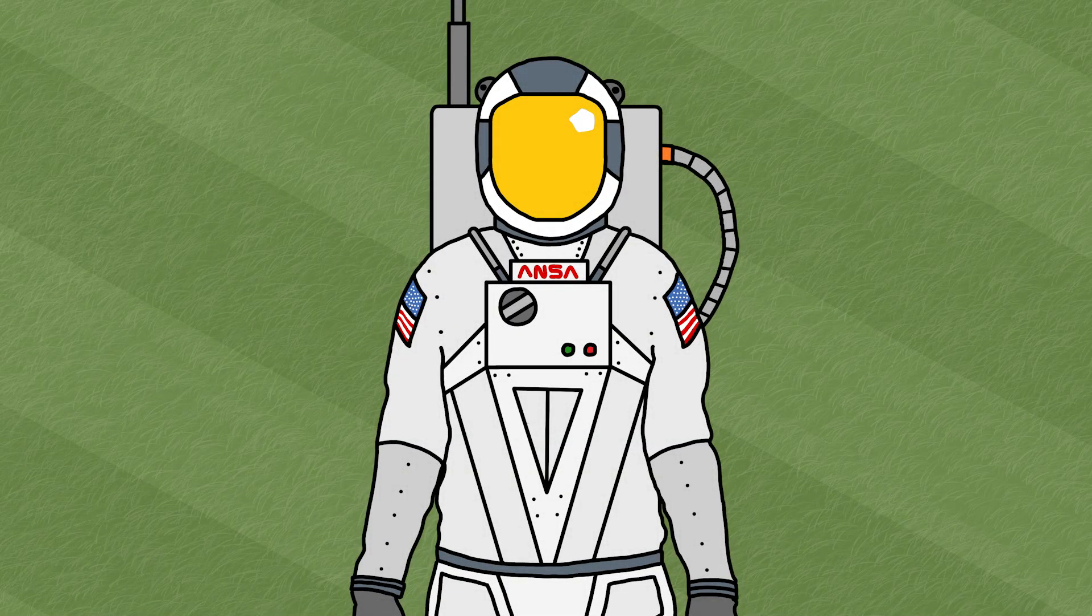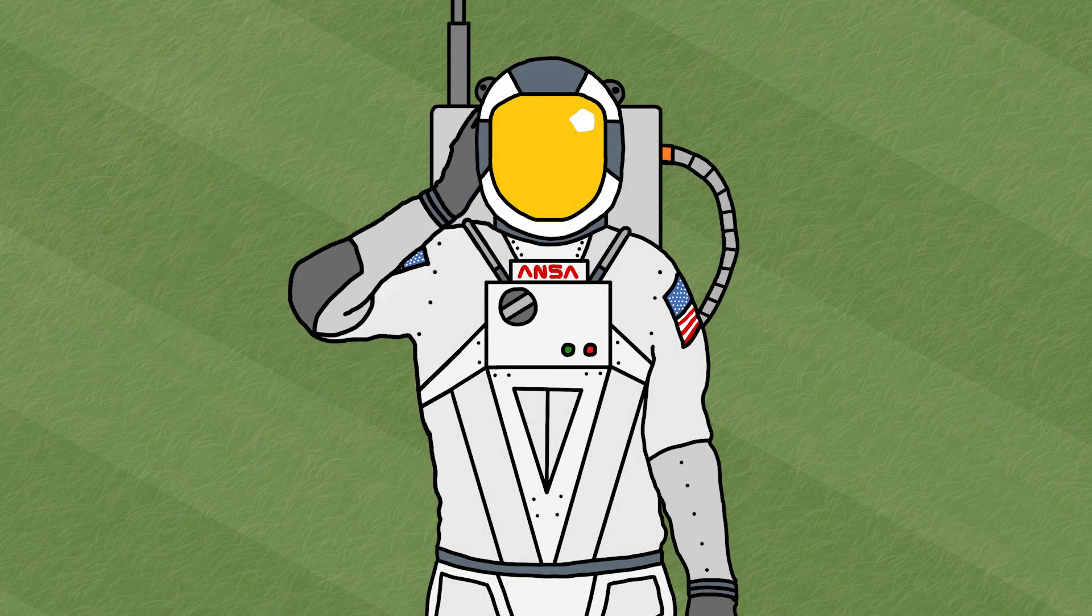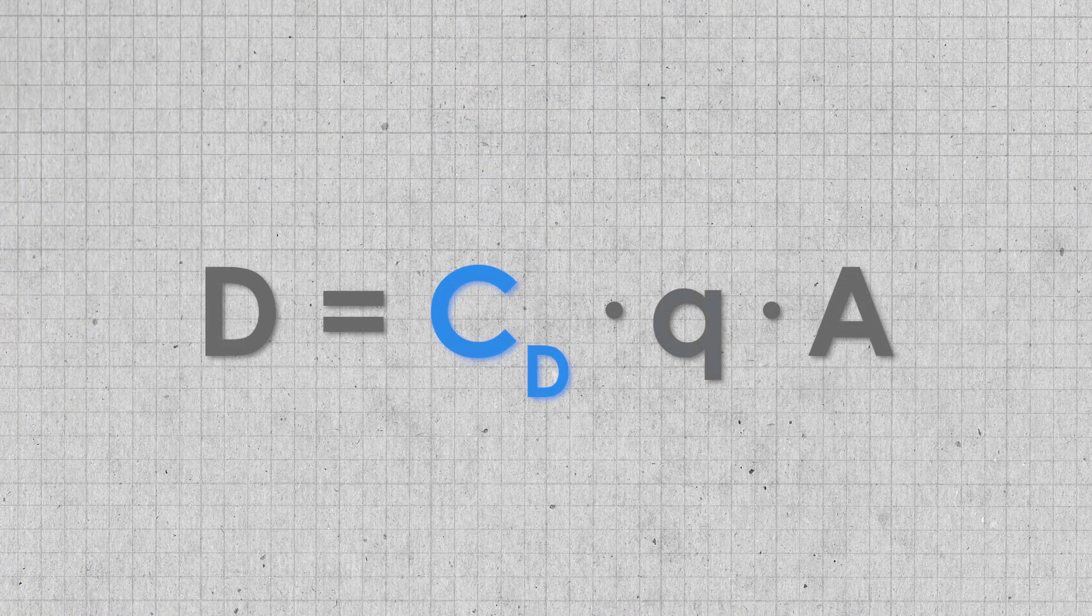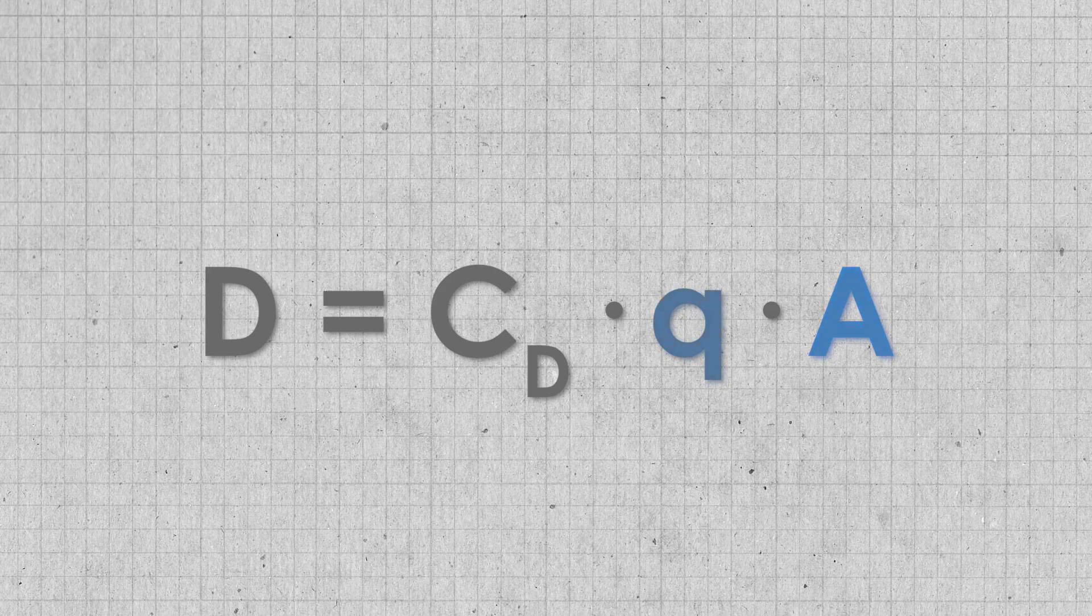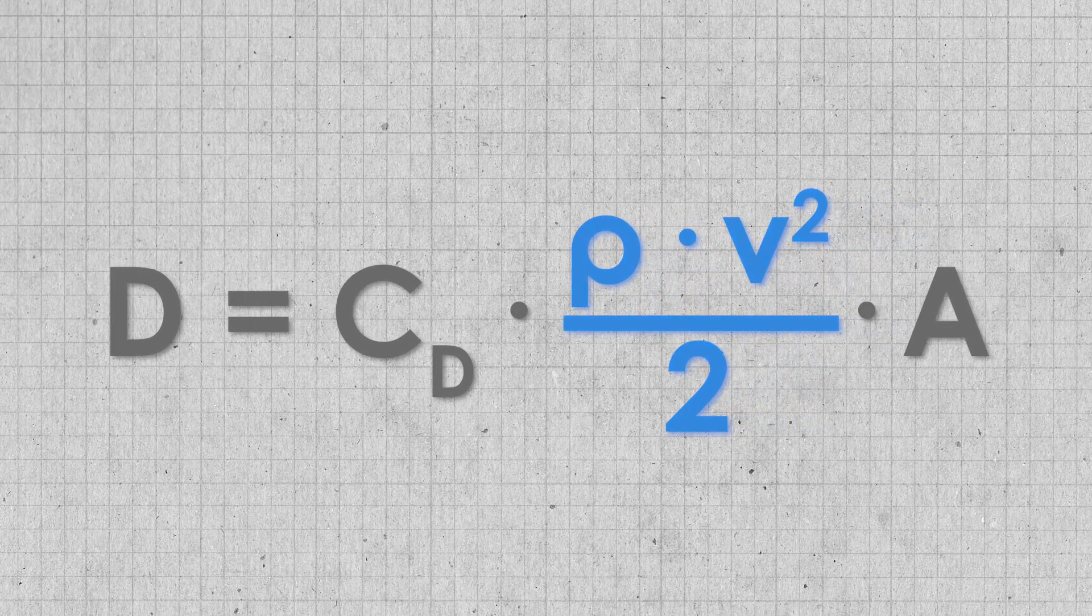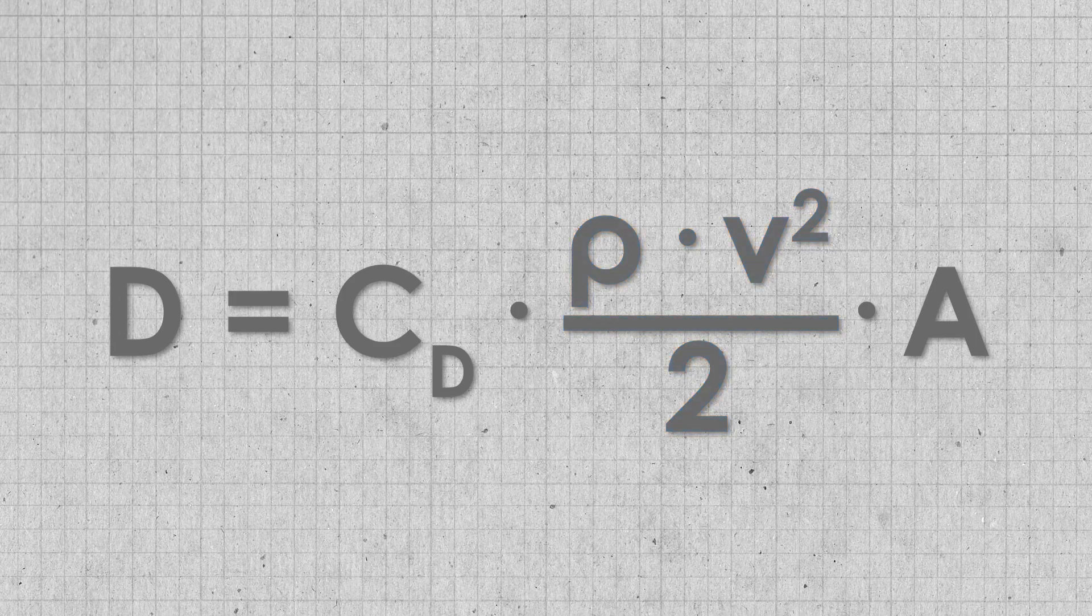Well, let's start with the basic drag equation, which is sort of becoming a theme on this channel. Drag is equal to your coefficient of drag times your dynamic pressure times your area. Dynamic pressure consists of one-half the air density times the velocity squared.